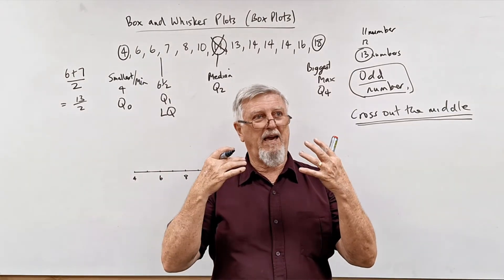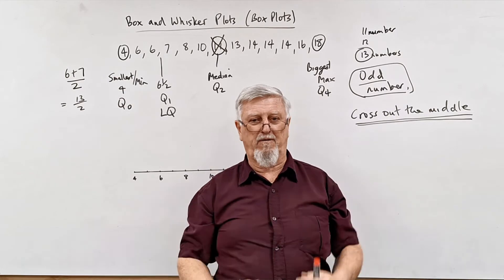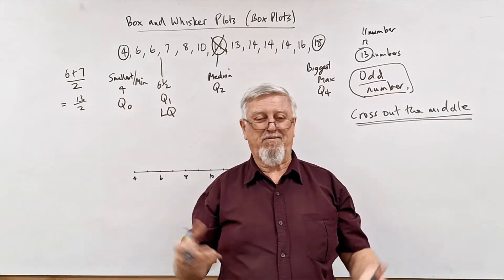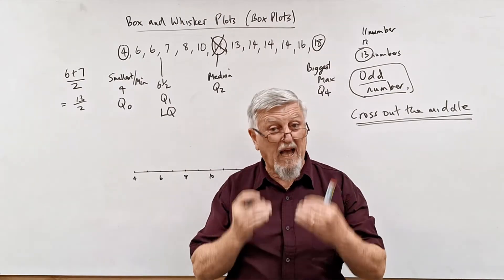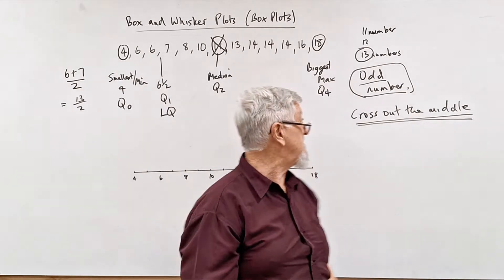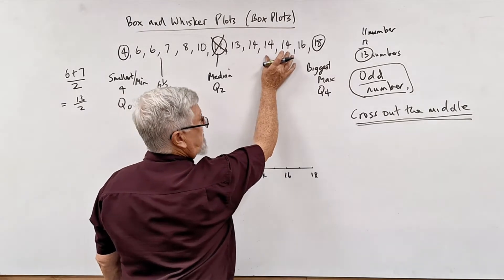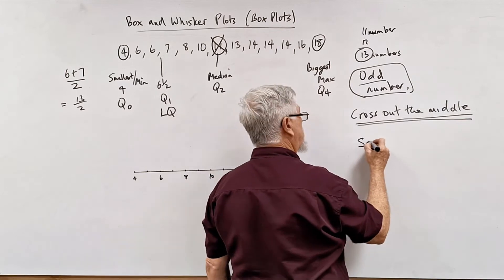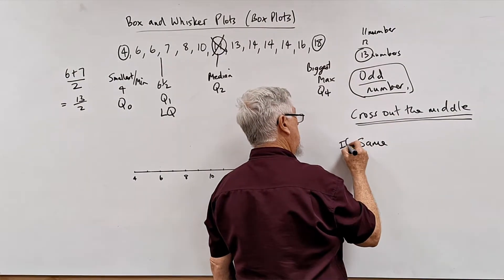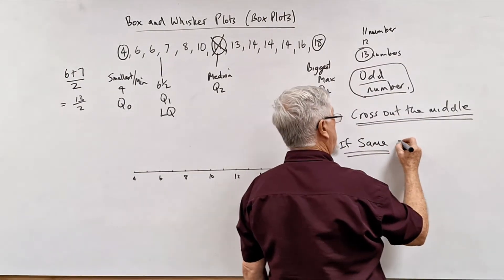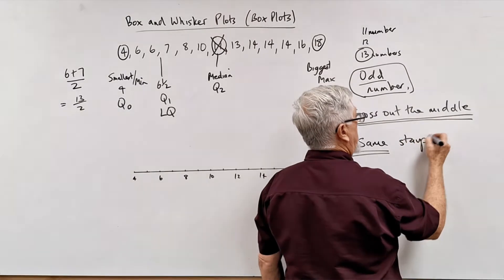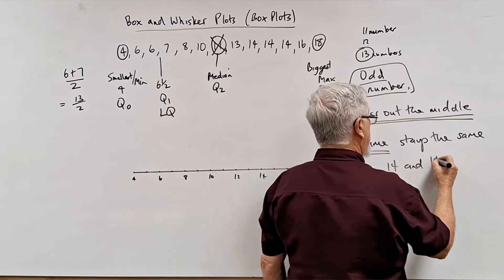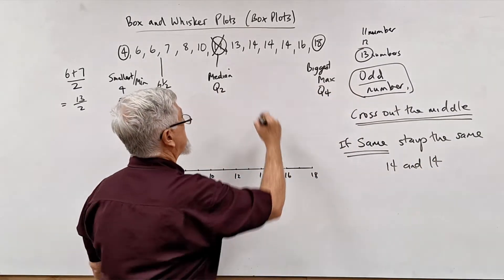Halfway between 14 and 14 is 14. So I would like to talk about money again. If you had 14 dollars and I had 14 dollars and I say let's split that in half, it's $28 altogether and we get 14 each. So it stays 14. It doesn't change. So if they're both the same, so another rule: if they are the same, it stays the same. So 14 and 14, the middle of 14 and 14 is 14.